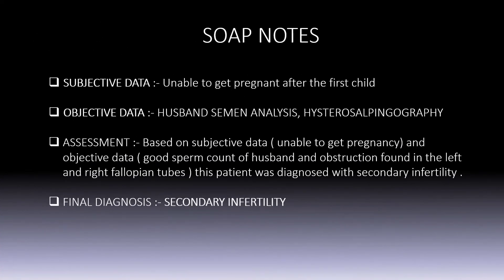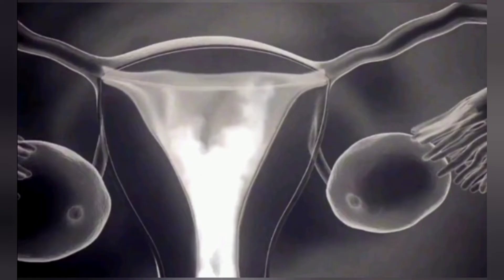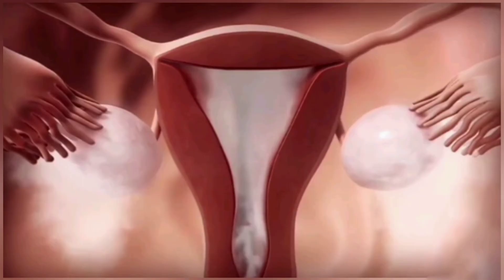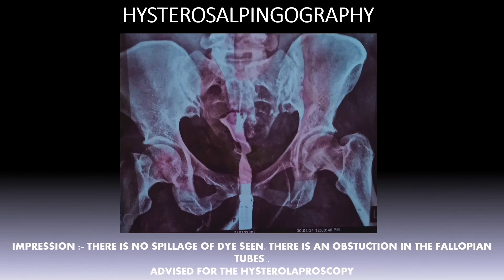They may ask you to explain hysterosalpingography. Hysterosalpingography is an X-ray test in which a thin tube is threaded into the vagina and cervix. A contrast material is injected into the uterus. A series of X-rays or fluoroscopy follows the dye, which appears white on X-ray, as it moves into the uterus and then into the tubes. If the tube is open, the dye gradually fills the fallopian tubes and spills out into the pelvic cavity, where the body resorbs the dye. If any abnormality in the shape and structure of the uterus is seen, it will be outlined. In this case, there was no spillage of dye seen, so we can assess an obstruction in the fallopian tubes.